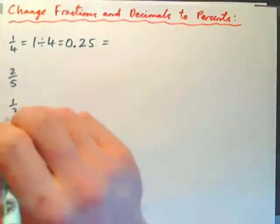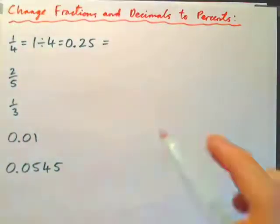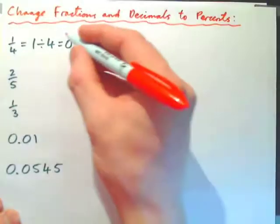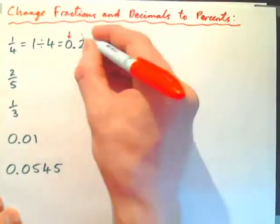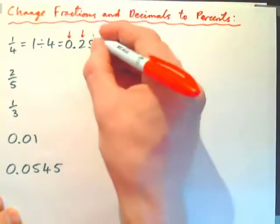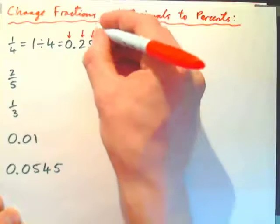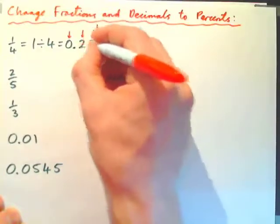And 0.25, if you know your decimal numbers, the digits here represent units. These digits represent tenths, so we have two tenths. But these digits here represent hundredths, so we have five hundredths.